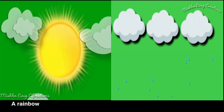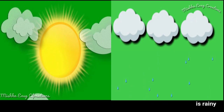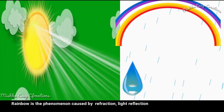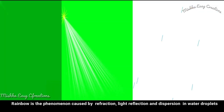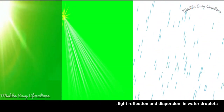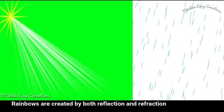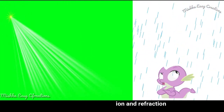A rainbow happens when one part of the sky is sunny and another is rainy. Rainbows are a phenomenon caused by reflection, light reflection and dispersion in water droplets. Rainbows are created by both reflection and refraction.